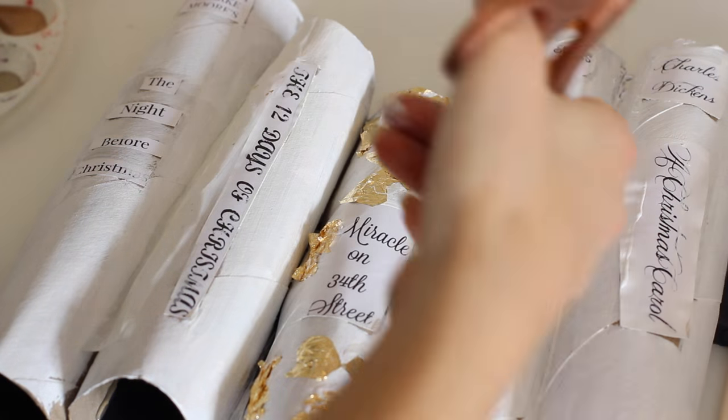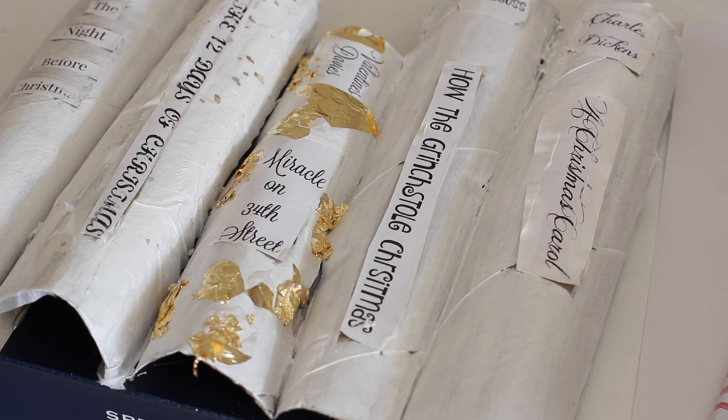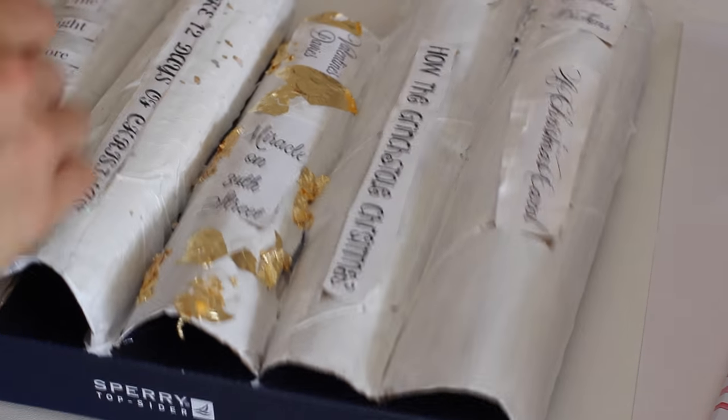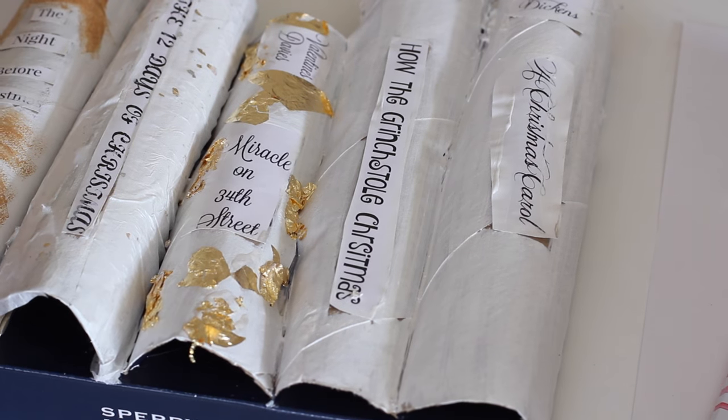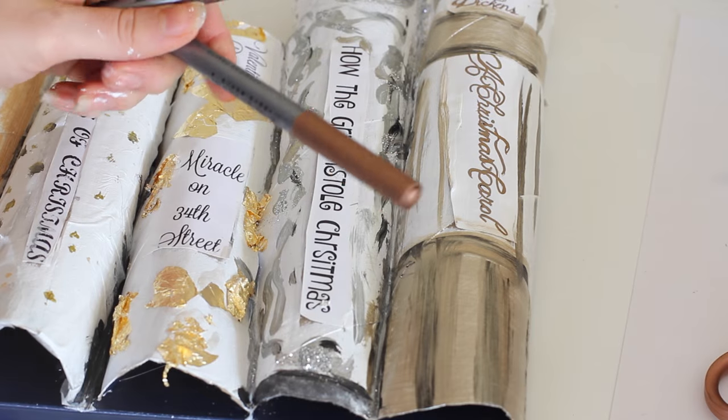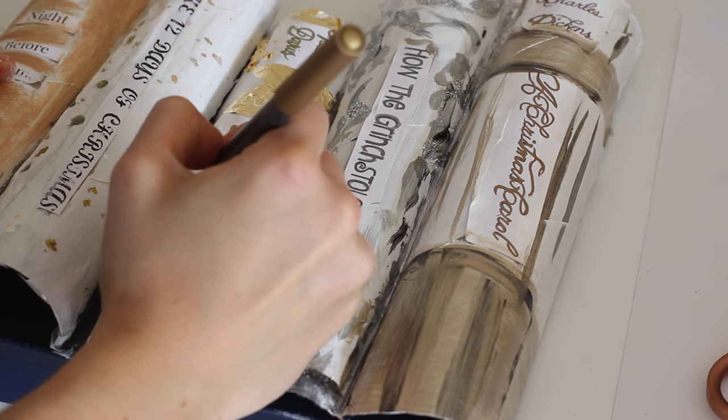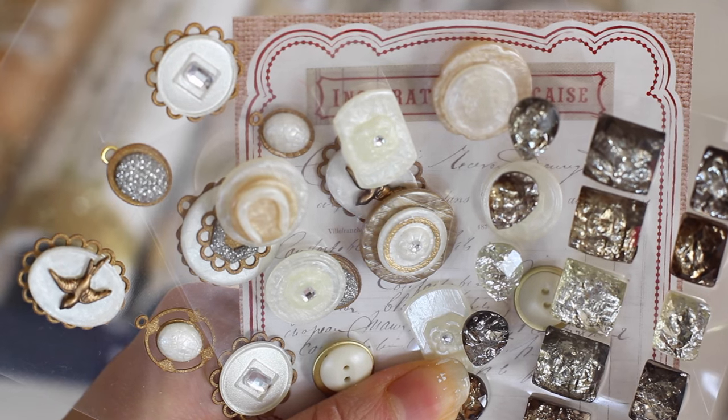This is some decoupage paper that I picked up at Michael's from the Martha Stewart line. I also went into the scrapbook section and found some really great little gems that were on clearance that fit the color scheme perfectly. I also used some copper and gold markers and paint to just continue to add in that really glamorous look that I wanted these books to have.